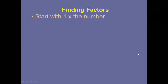Here is the method for finding factors. Start with one — multiply one by the number. For example, for 18: one times 18 is 18. Then try two, three, four, and so on. I am again saying: keep learning your times tables — they are really important.